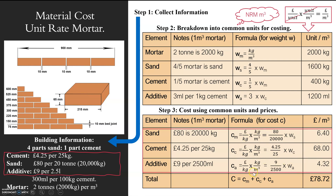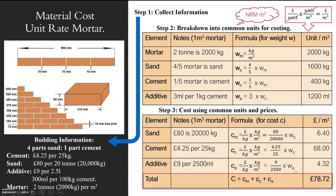It's just using maths — you're plugging in the values. What's the pound? 4.25. What's my kilograms? 25. And you do the same for all the others. For sand it's £80 per 20,000 kilograms, so I put 80 on top, 20,000 underneath, and multiply by the weight of sand per meter cubed, which is 1,600. You just follow this formula through, and you end up with all of the pounds per meter cubed for each element, and then you add them all together.